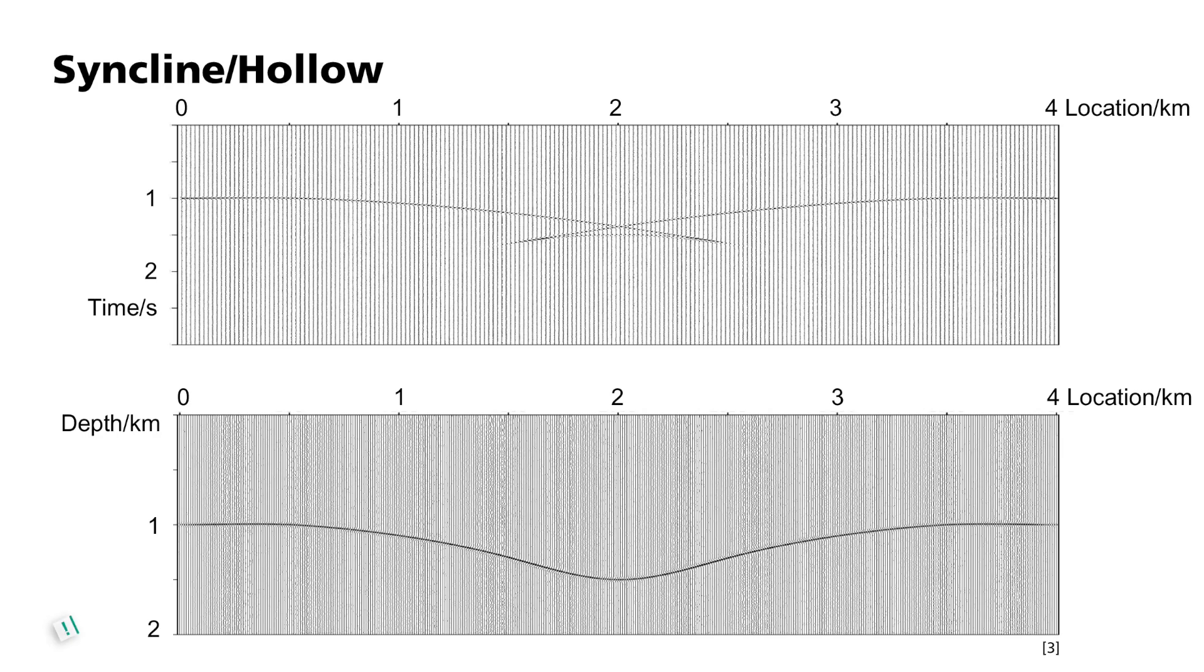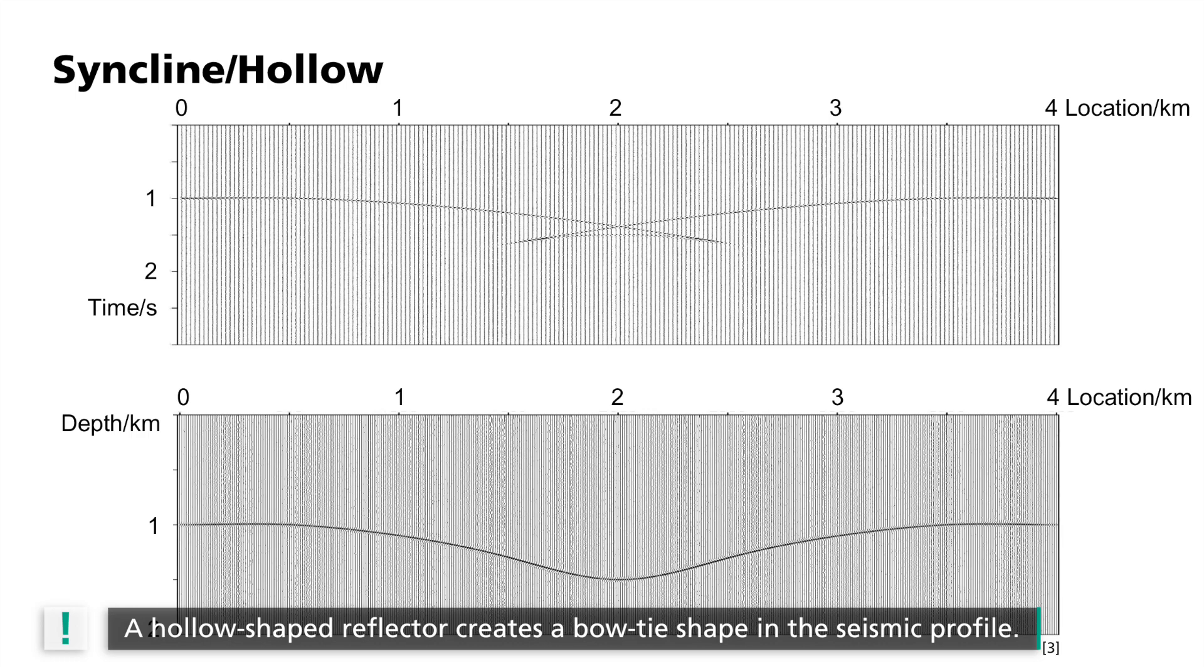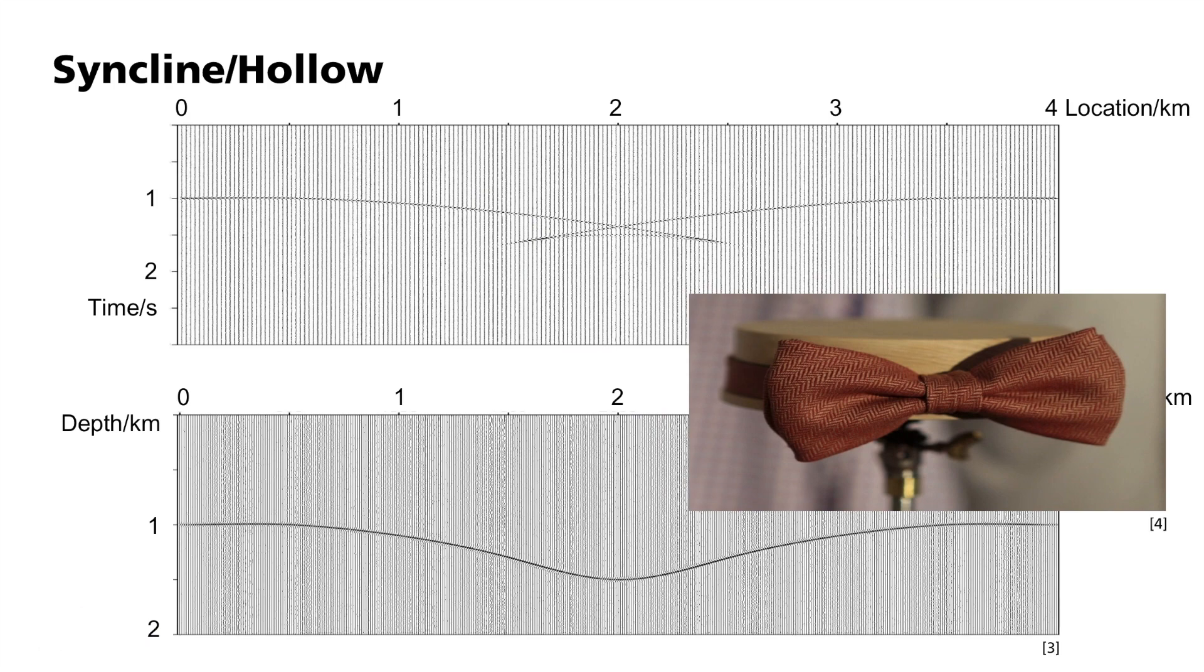The structure of the Earth is, of course, much more complex than just a series of horizontal layers. A typical structure, for example, is that of a syncline or hollow. I shall now show you the resulting seismic profile. The travel time curves in the seismic profiles resemble a tie-loop, or a bow tie. While the migrated image shows a simple syncline as a layer boundary in the subsurface.